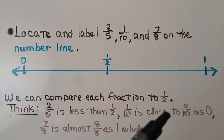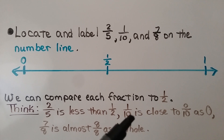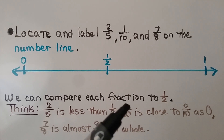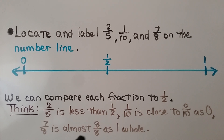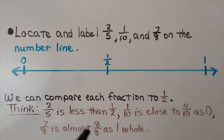One-tenth is close to zero-tenths, so it's pretty far from one-half. Five-tenths would be one-half because five is half of ten. And seven-eighths is almost eight-eighths, which is one whole. Remember, when the numerator and denominator are the same, it equals one whole — we have all the parts it was split into.